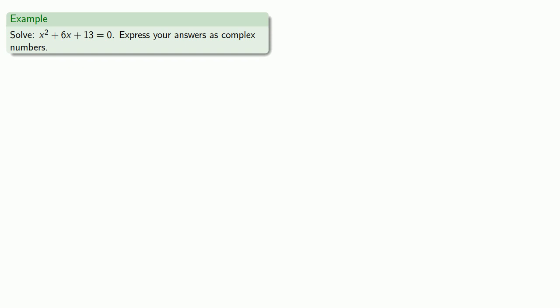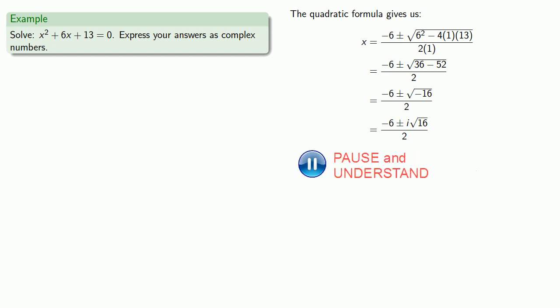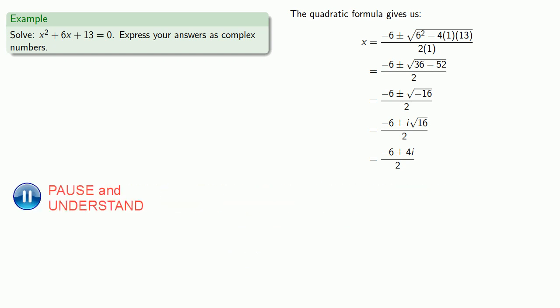So for example, we want to solve the equation x squared plus 6x plus 13 equals 0. So the quadratic formula gives us... And we get to this point negative 6 plus or minus square root of negative 16 over 2. So we can rewrite that as negative 6 plus or minus i square root of 16. Square root of 16 is equal to 4. So this equation's solution is negative 6 plus or minus 4i over 2. We'll split our solutions negative 6 over 2 plus 4i over 2 or negative 6 over 2 minus 4i over 2. And we'll simplify negative 3 plus 2i or negative 3 minus 2i.